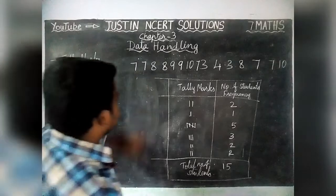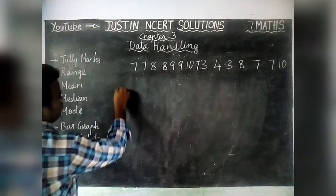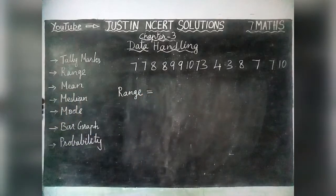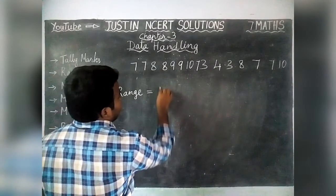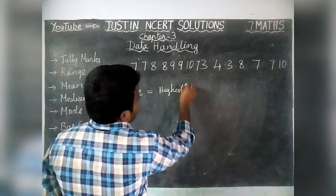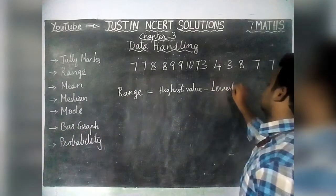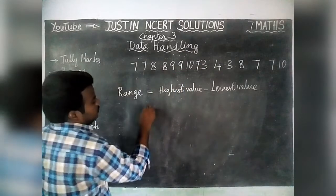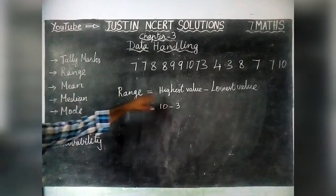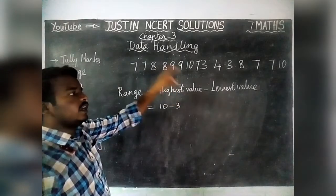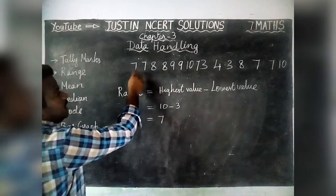Next we are going to see range. Range is equal to the difference between the highest value and the lowest value — that is, highest value minus lowest value. Here the highest mark is 10 and the lowest mark is 3. So 10 minus 3 equals 7. The range of the given data is 7.